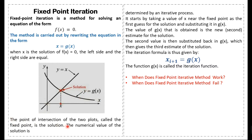The point of intersection, called the fixed point, is the solution. The numerical value of the solution is determined by an iterative process using x = g(x), which is an iterative method.